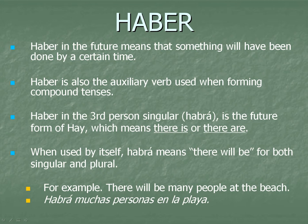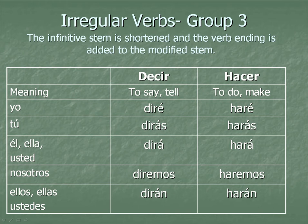Okay, this is group number three. The infinitive stem is shortened and the verb ending is added to the modified stem. So basically, decir and hacer — they're almost changed completely. But these, again, are very important to learn.